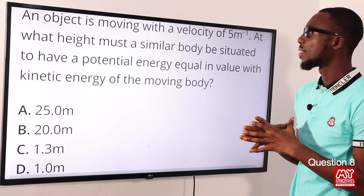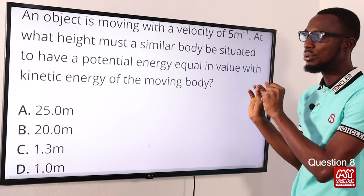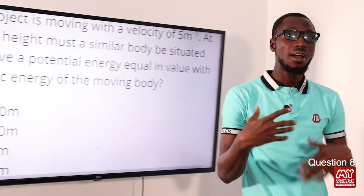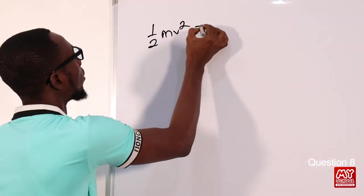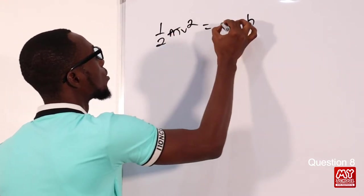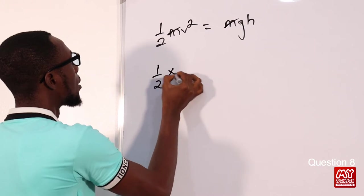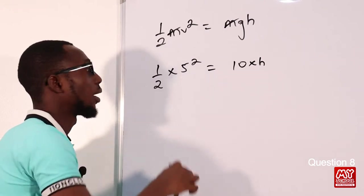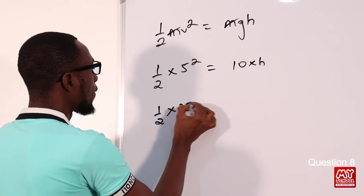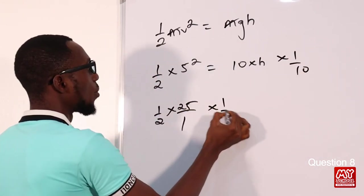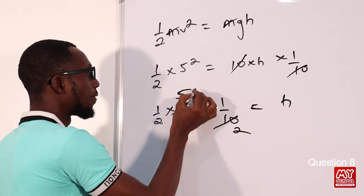Question eight: an object moves with a velocity of 5 m/s. At what height must a similar body be situated to have potential energy equal to the kinetic energy of the moving body? Setting KE = PE: ½mv² = mgh. The mass cancels, so ½ × 5² = 10 × h, giving 12.5 = 10h. Dividing both sides by 10: h = 1.25 meters, approximately 1.3 meters.